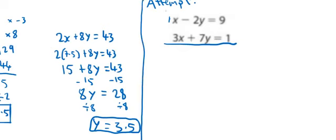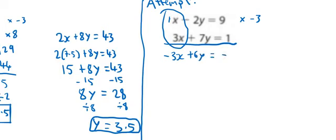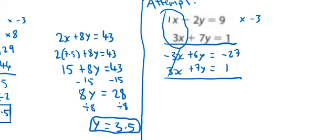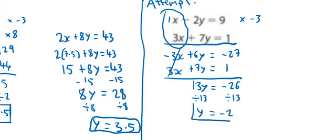All right, so run through this quickly then. If I'm changing the x's, because they're both positive, I can multiply the top by minus 3. So if I multiply that 1x by minus 3, I get minus 3x. Now just be careful here, because I'm multiplying minus 3 by minus 2y — minus multiplied by minus becomes plus 6y. And then minus 3 multiplied by 9 is minus 27. The bottom equation just stays the same: 3x plus 7y equals 1. So my minus 3x and my 3x cancel out to 0. 6y plus 7y is 13y, equals minus 27 plus 1 which is minus 26. Then divide by 13, so y equals minus 2.